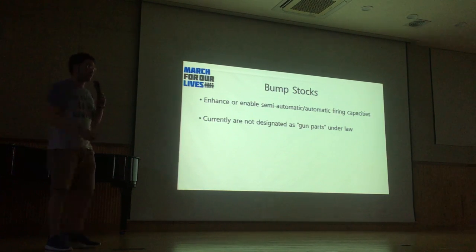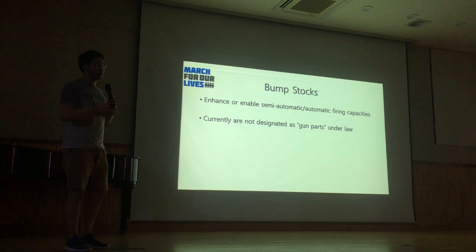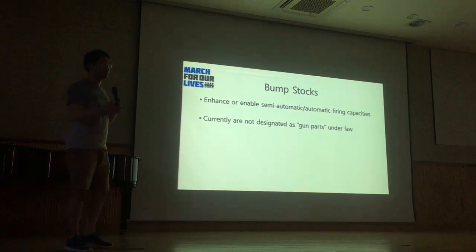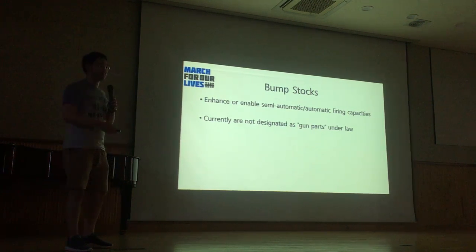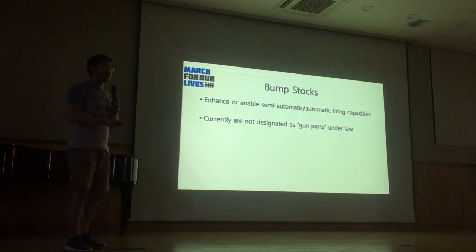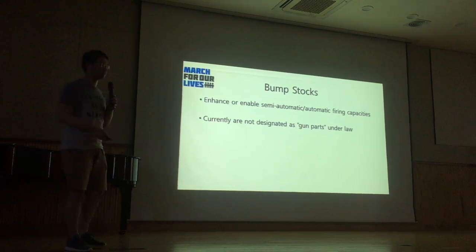The actual problem are these gun parts called bump stocks. What they do is, when gun companies make guns that are originally military issue and then give them to civilians, they remove some of the more deadly features. But these bump stocks enable users to use automatic fire capabilities on these civilian weapons, which greatly increases the number of injured and casualties from these kinds of crimes.